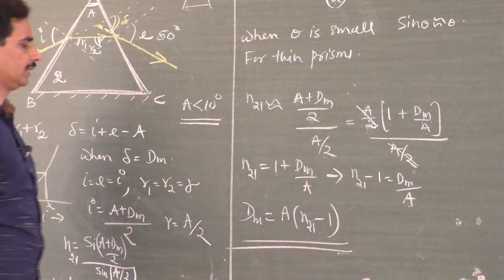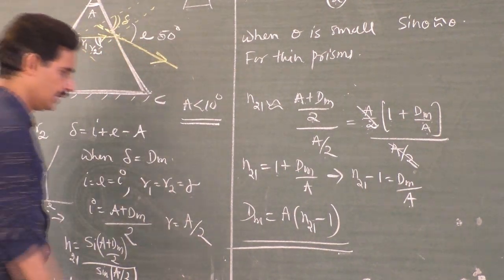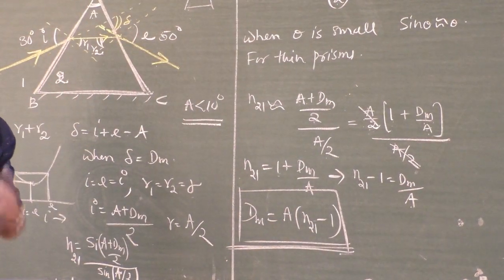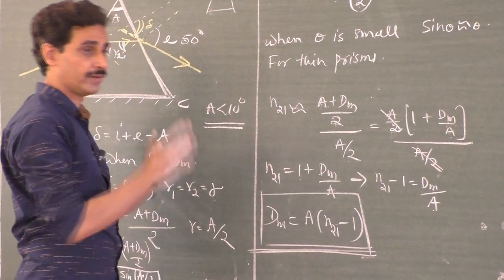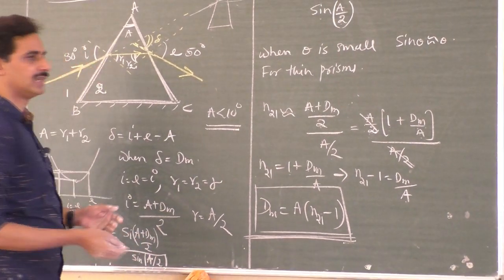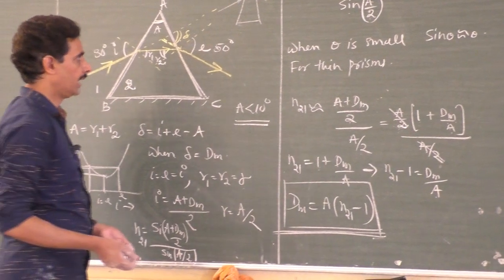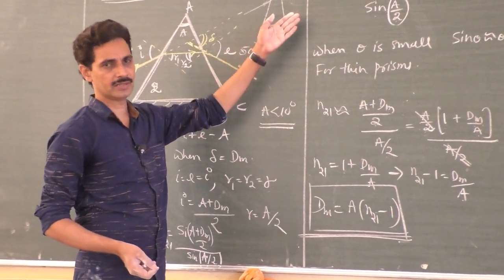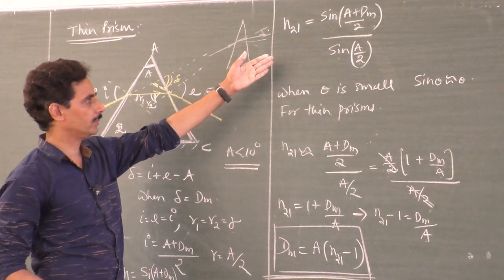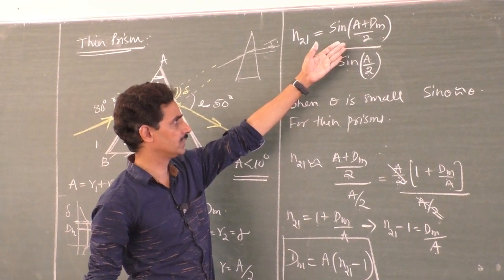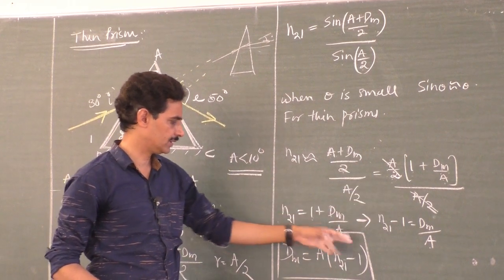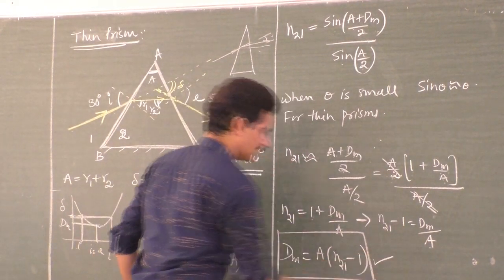This may be asked for the exam: obtain an expression for deviation of a thin prism. Thin prism is one whose refracting angle is very less, even less than 10 degrees. For such a prism, angle of incidence, emergence, refraction — everything will be very small. You know the formula for refractive index of the prism: sin((A+dm)/2) / sin(A/2). Since sin theta ≈ theta for small angles, take A/2 outside, cancel, and you will remain with this. So this is the deviation for thin prism: dm = A(n - 1).